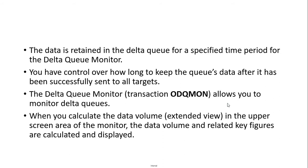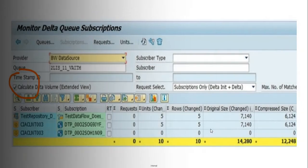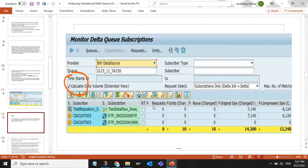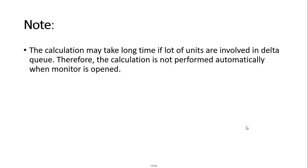The data is retained in the delta queue for a specified time period for the delta queue monitor. You have control over how long to keep the queue's data after it has been successfully sent to all targets. The delta queue monitor, transaction ODKMAN, allows you to monitor delta queues. When you calculate the data volume — extended view — in the upper screen area of the monitor, the data volume and related key figures are calculated and displayed. The calculation may take a long time if many units are involved in the delta queue. Therefore, the calculation is not performed automatically when the monitor is opened.